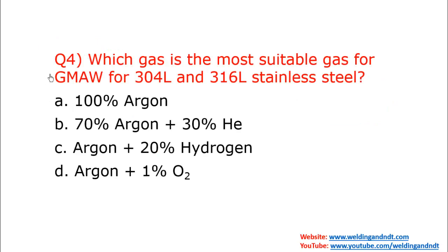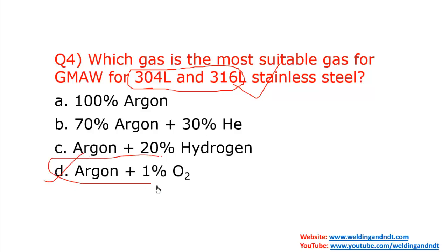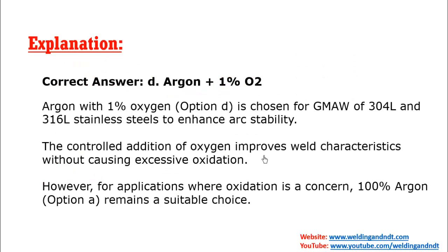Question number four: which gas is the most suitable for GMAW of 304 and 316L steel? These are austenitic stainless steels, and the best gas mixture is argon plus 1% oxygen. The 1% oxygen gives good weld characteristics without causing excessive oxidation. However, if oxidation is a major concern, oxygen should be avoided; otherwise, argon with 1% oxygen gives good results.